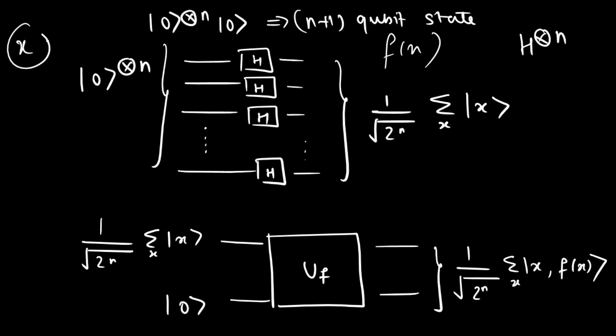Also quantum parallel evaluation of a function with n bit input x and 1 bit output f(x) can be performed by preparing n+1 qubit state of |0⟩ that is |0⟩⊗n ⊗ |0⟩ will give us n+1 qubit state and operating the first n qubits with the Hadamard gates given by this transform which would result in this general output.